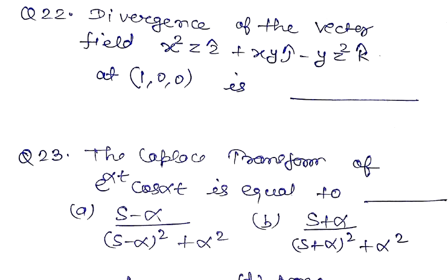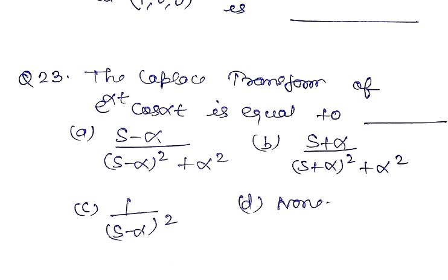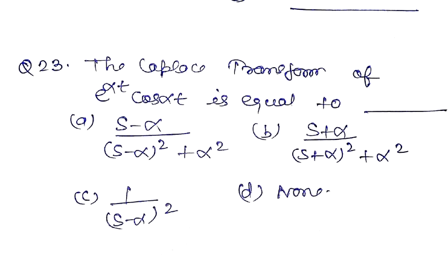Question number 23. The Laplace transform of e to the power alpha t cos alpha t is equal to: s minus alpha divided by s minus alpha square plus alpha square, s plus alpha divided by s plus alpha square plus alpha square, 1 by s minus alpha square, or none.